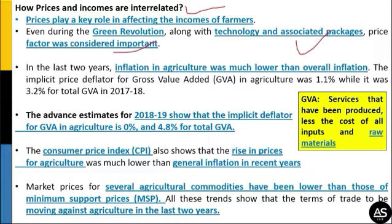In recent years, we have witnessed that inflation in agriculture is very much lower compared to overall inflation. Data shows that GVA in agriculture is 1.1% as compared to 3.2% of total GVA in 2017-18. Gross Value Added is what value you gain after applying inputs — for example, if inputs cost 100 rupees and you sell for 150 rupees, GVA is 150 rupees.